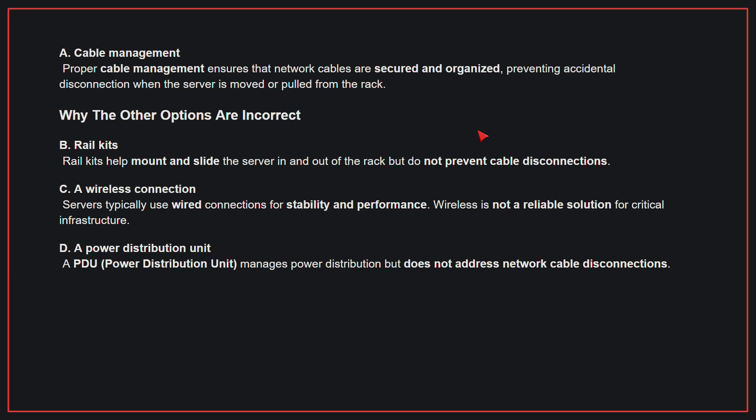Why the other options are incorrect: B, Rail kits — rail kits help mount and slide the server in and out of the rack, but do not prevent cable disconnections. C, A wireless connection — servers typically use wired connections for stability and performance; wireless is not a reliable solution for critical infrastructure. D, A power distribution unit — a PDU manages power distribution but does not address network cable disconnections. Therefore, the correct answer is A: Cable management.